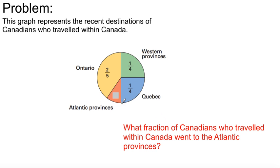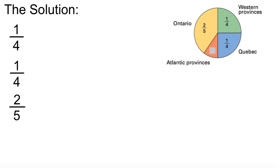What fraction of Canadians who traveled within Canada went to the Atlantic provinces? We don't know that yet. We have to take these fractions, add, and then subtract the difference, and then we'll have our answer. But first we need to do something. What's that one thing we need to do? Yes, find a common denominator.